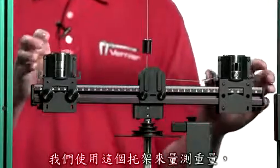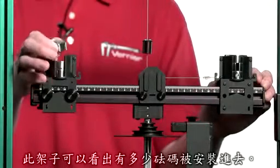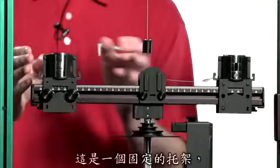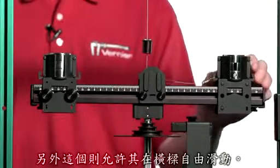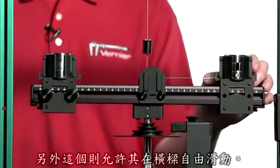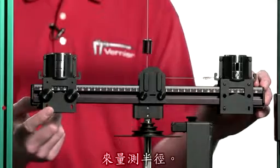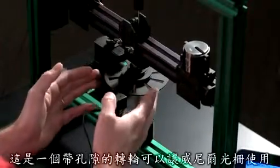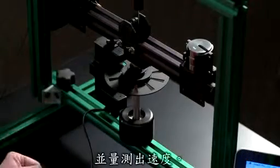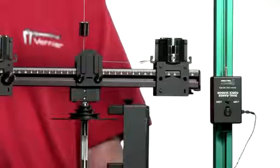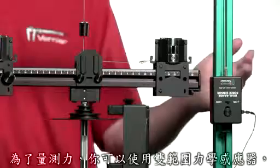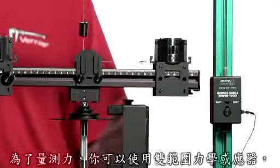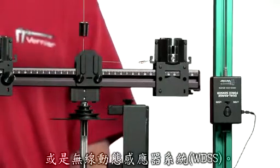We'll measure the mass using these carriages, which have calibrated masses installed. There's a fixed carriage and one which is allowed to slide freely on the beam. We'll measure the radius using the markings on the front of the beam. There's a slotted wheel which is allowed to pass through a vernier photogate to measure the velocity. To measure the force, you can use a dual range force sensor or a wireless dynamics sensor system.